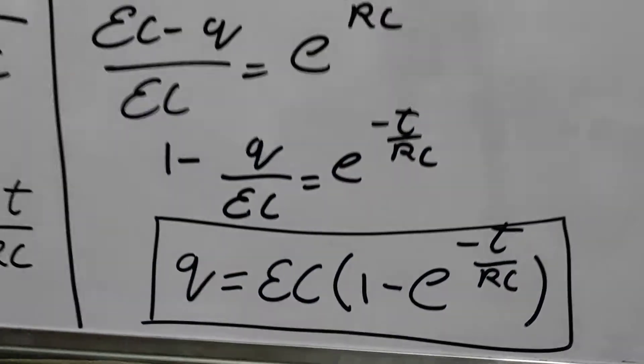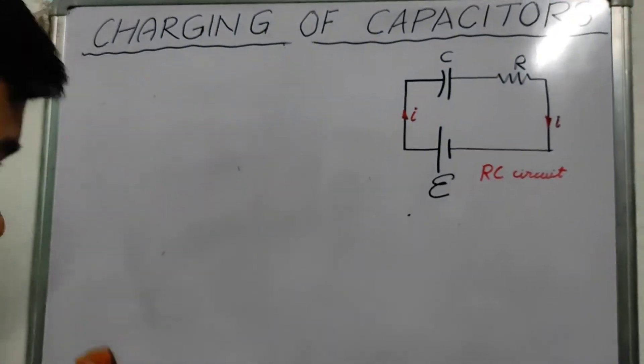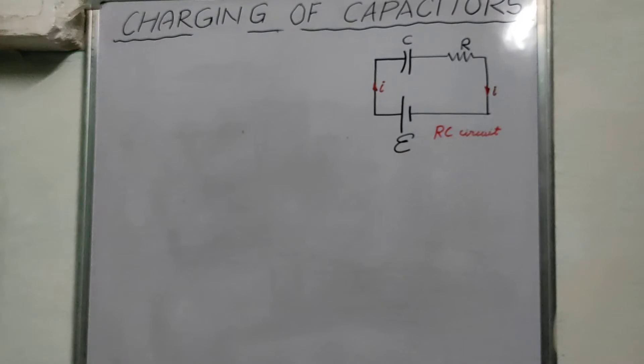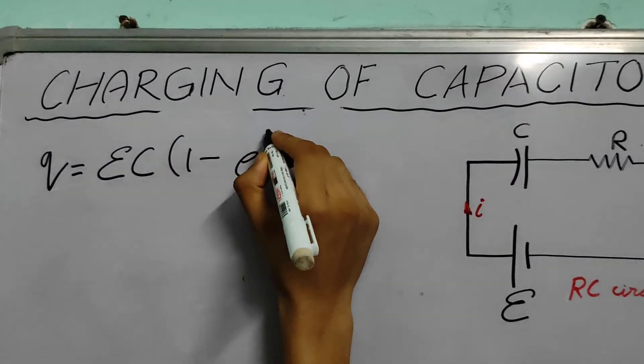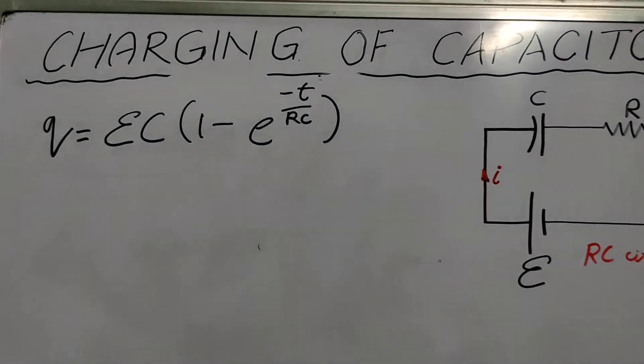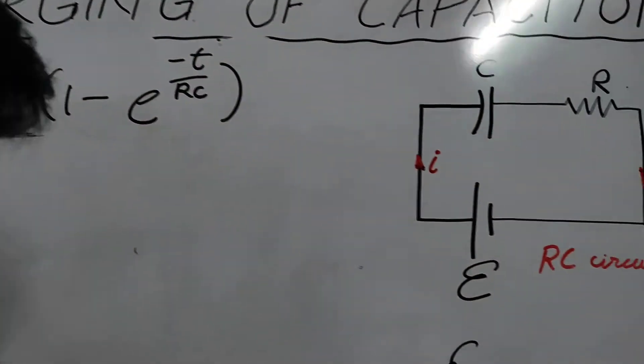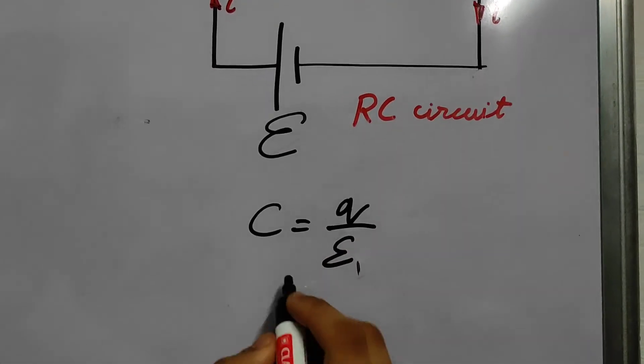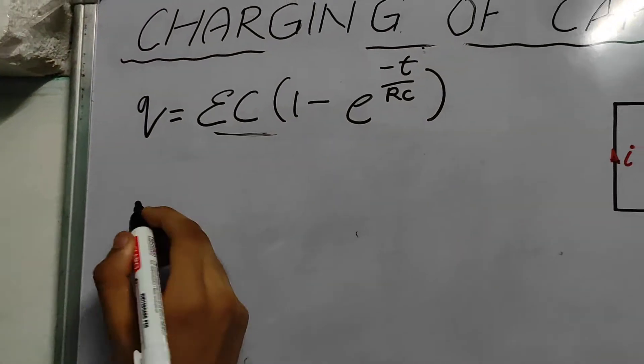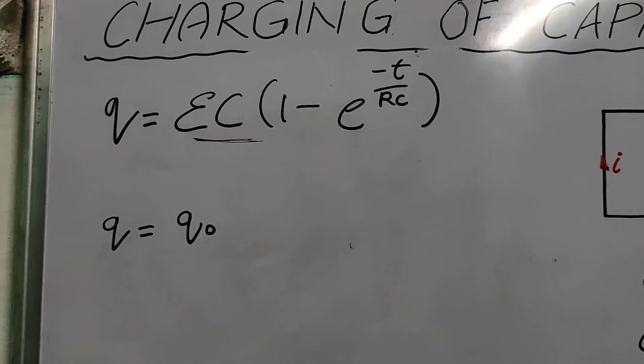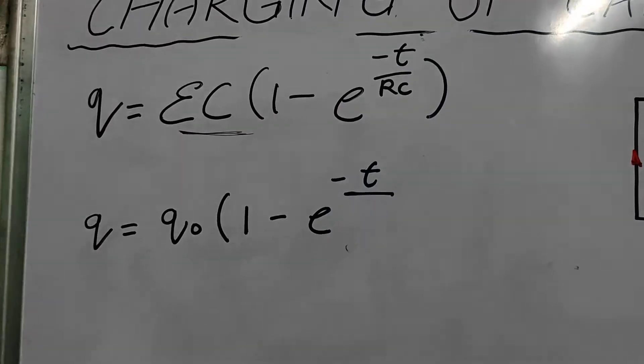This becomes easy to solve now. This is 1 minus Q by EC E to the power minus T by RC. That's our function of Q. That's our charge on the capacitor as a function of time. Let me write this down. Q is equal to EC 1 minus E to the power minus T by RC. And this is the maximum charge on the capacitor. We know that capacitance is charge by voltage. The charge becomes capacitance into voltage EC. So that's the maximum charge. We can write this as Q0 if you want to. Now what is RC?